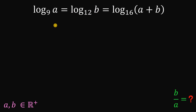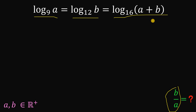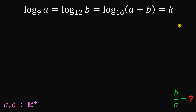Alright, in this question, the given is this equation: logarithm of A to the base of 9 equals logarithm of B to the base of 12 equals logarithm of A plus B to the base of 16, wherein A and B are both positive real numbers. The question is what is the numerical value of B over A? To answer this, we are going to use the property of exponents. So first, let's equate all of this to a variable k.